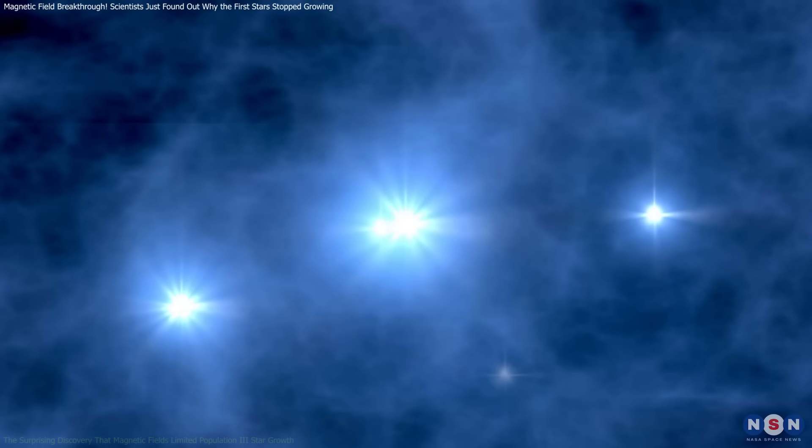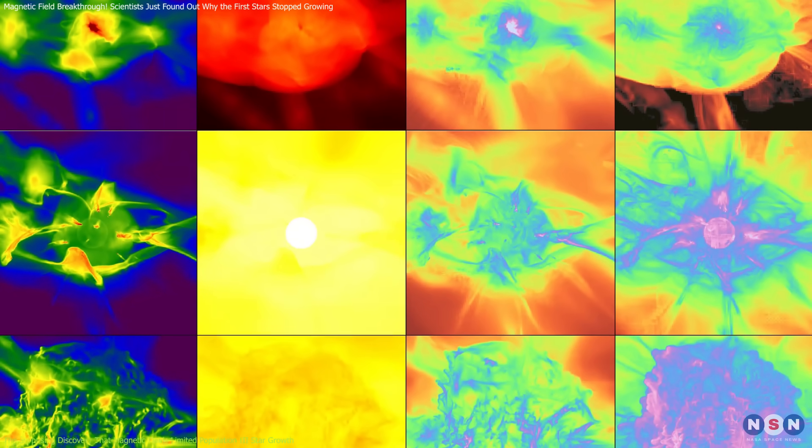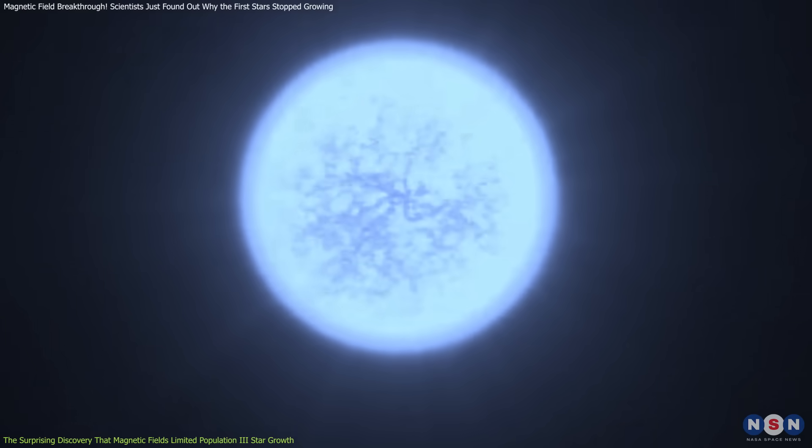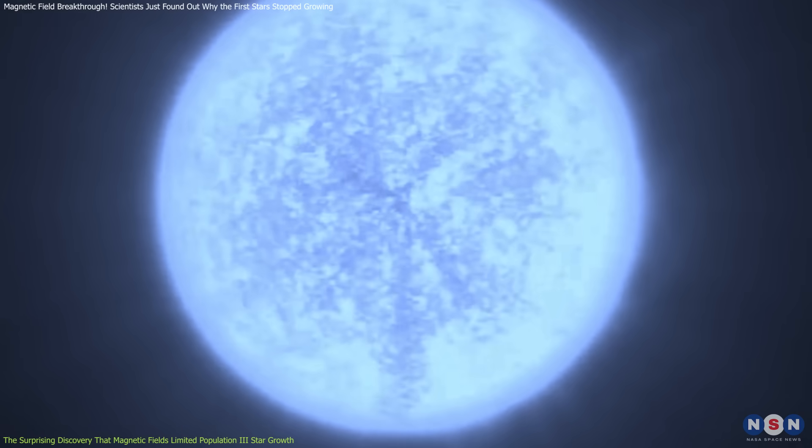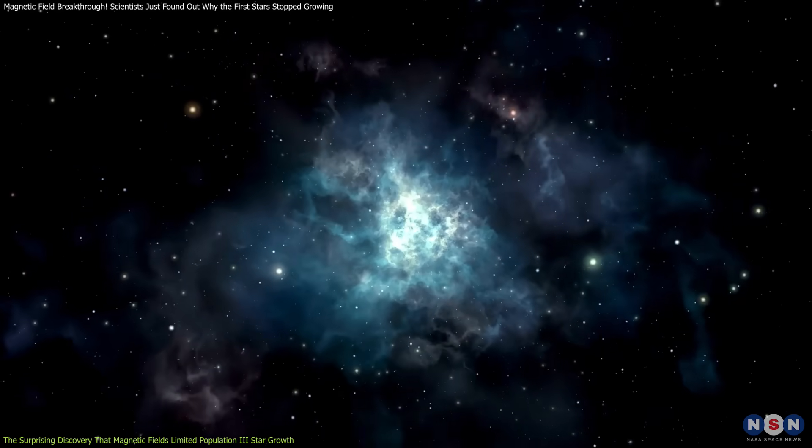For decades, scientists have tried to determine the actual mass of Population III stars through computer simulations. Many of these simulations only accounted for gravity and radiative feedback, leading to the conclusion that these stars could reach hundreds or even thousands of solar masses.